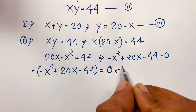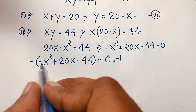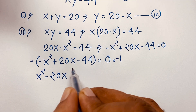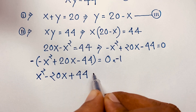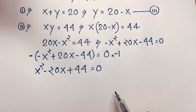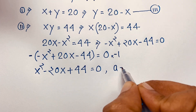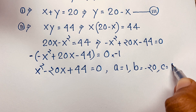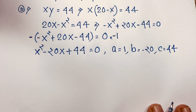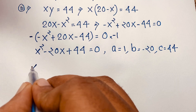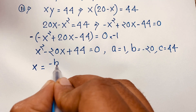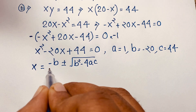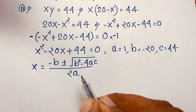From the quadratic equation x squared minus 20x plus 44 equals 0, we identify a equals 1, b equals negative 20, and c equals 44. We now apply the quadratic formula: x equals negative b plus or minus square root of (b squared minus 4ac), all over 2a.